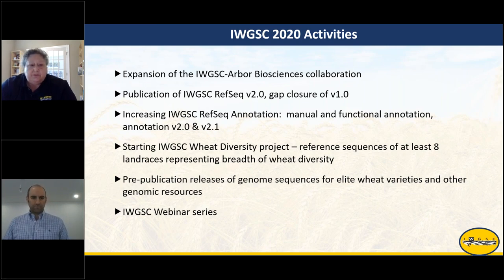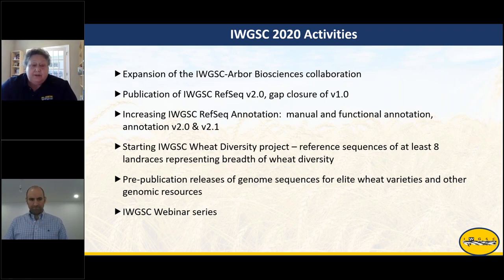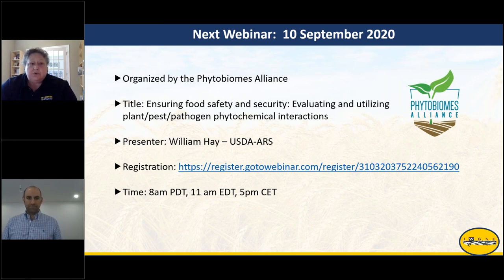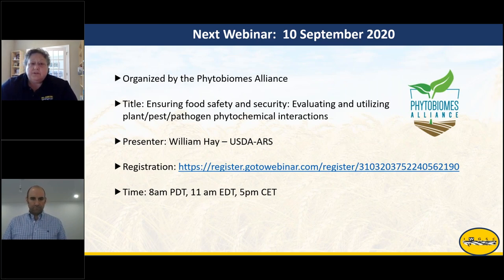We are starting the IWGSC Wheat Diversity Project and hope to have reference sequences of at least eight land races that represent the entire breadth of wheat diversity, as well as coordinating pre-publication releases of genome sequences for elite wheat varieties. Our next scheduled webinar is organized by the Phytobiomes Alliance, titled Ensuring Food Safety and Security: Evaluating and Utilizing Plant-Pest-Pathogen Phytochemical Interactions, which includes work on cereals. William Hay from the USDA ARS will be giving that presentation.